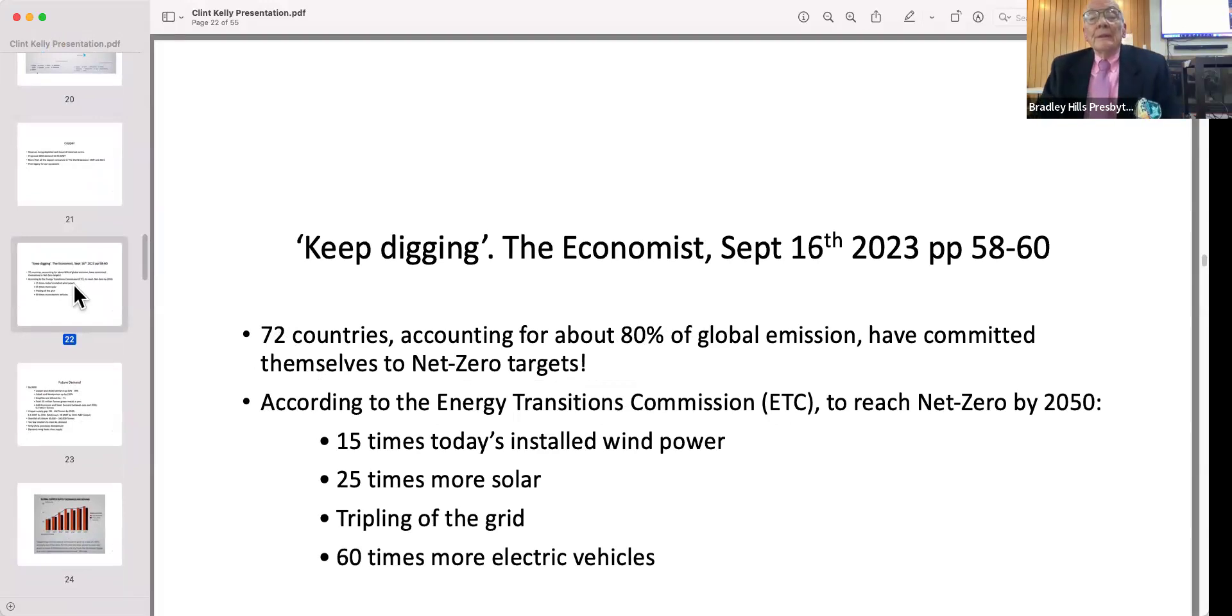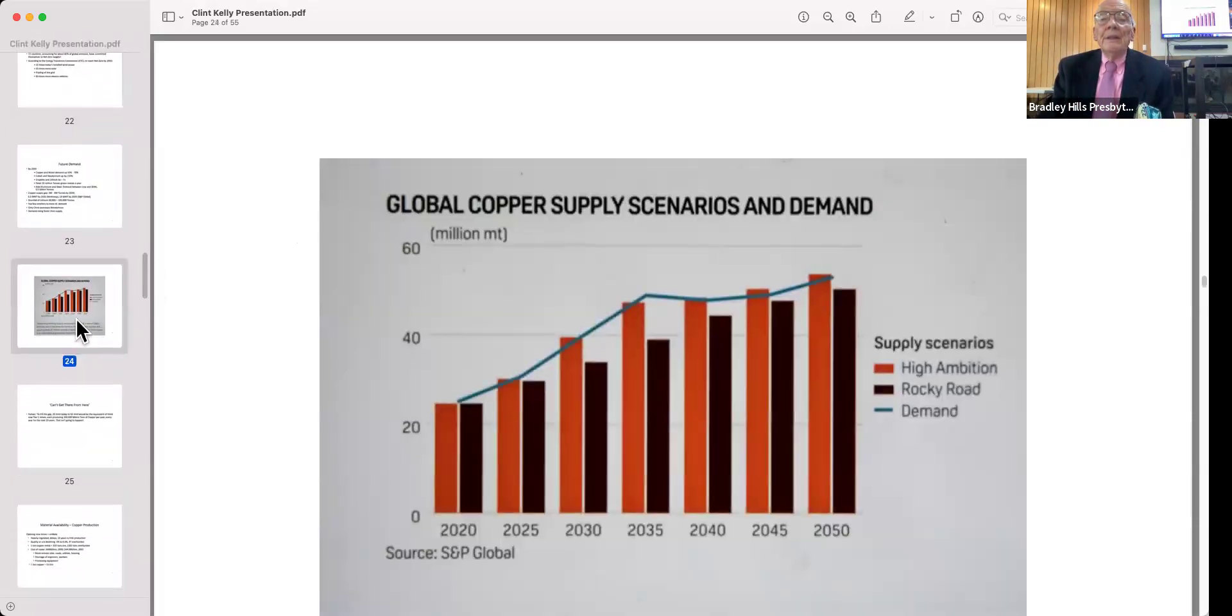The Economist had an interesting article last year talking about how many countries have committed to meet the net zero targets. According to the Energy Transitions Commission, you need 15 times today's installed wind power, 25 times more solar, need to triple at least the grid, and have 60 times more electric vehicles. S&P Global, which keeps track of commodity prices and commodity factors, shows us running out roughly around 2050. Others say there's going to be a shortage just in the next few years.